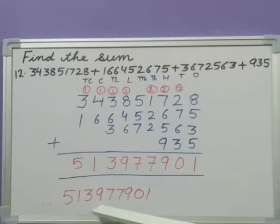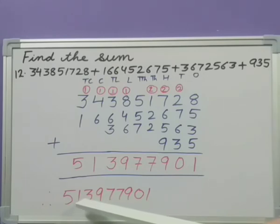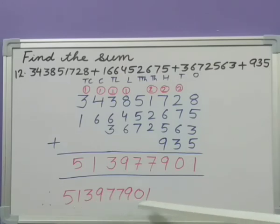So what is the number now? Again we don't know how to read it, so start from here. Ones, tens, hundreds, thousands, ten thousands, lakhs, ten lakhs, crores, ten crores. Therefore the sum is 51 crores, 39 lakhs, 77,901.